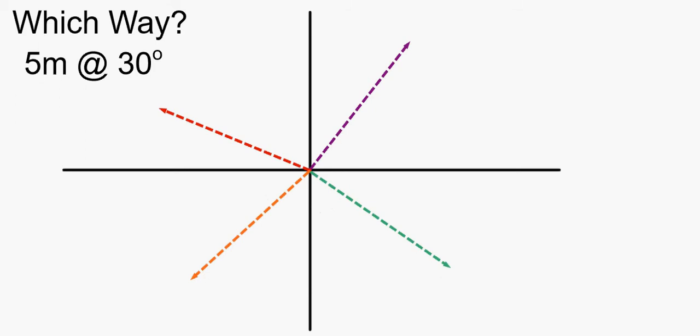In order to properly do our vectors and be able to talk about them so everybody knows what's going on, we have to have a standard way of discussing angle and direction. So one standard way is: over here is always zero degrees, up here to the top is always 90 degrees, this over here is 180 degrees, and this down here would be 270 degrees.